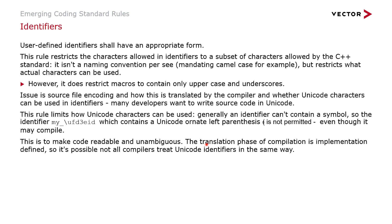User-defined identifiers shall have an appropriate form. This rule restricts the characters allowed in identifiers to a subset of characters allowed by the standard. It's not a naming convention per se — it doesn't mandate CamelCase — but it restricts what actual characters can be used. It does restrict macros to uppercase and underscores only, which is fairly standard. The issue is source file encoding and how this is translated by the compiler, and whether Unicode characters can be used in identifiers. Most developers want to write source code in Unicode, but the rule restricts how Unicode can be used in identifiers themselves — identifiers can contain letters and numbers, but not Unicode symbols. For example, an identifier containing a Unicode ornate left parenthesis is not permitted, even though it will compile and run. This makes the code readable and unambiguous, and also gets around the issue of the translation phase being implementation-defined, since not all compilers will treat Unicode identifiers the same way.